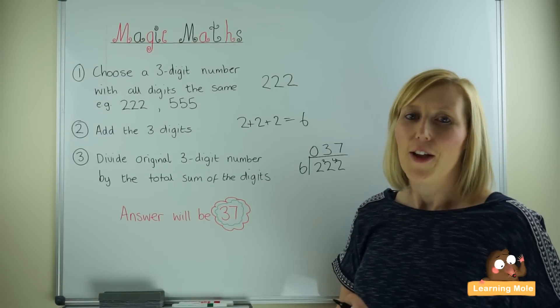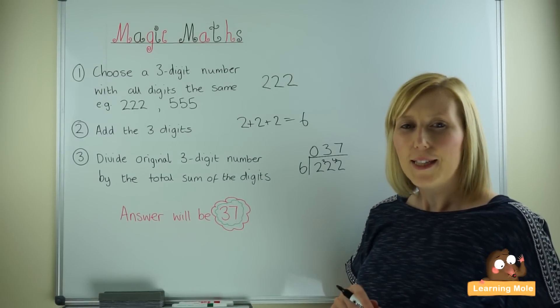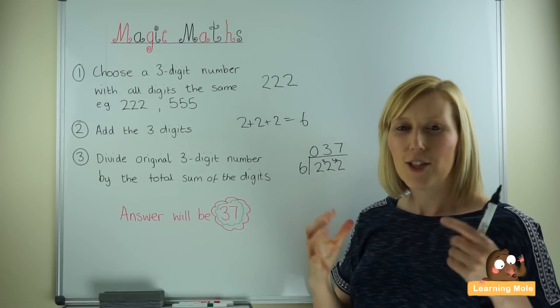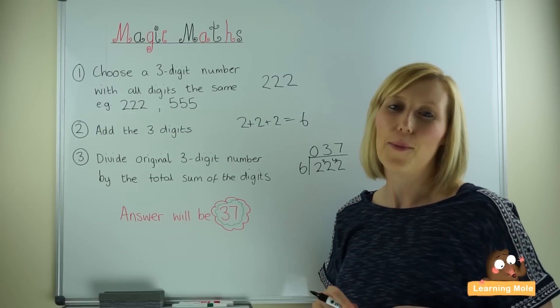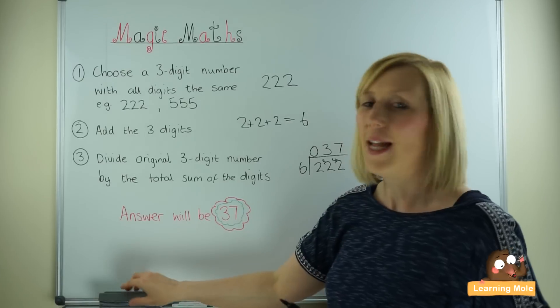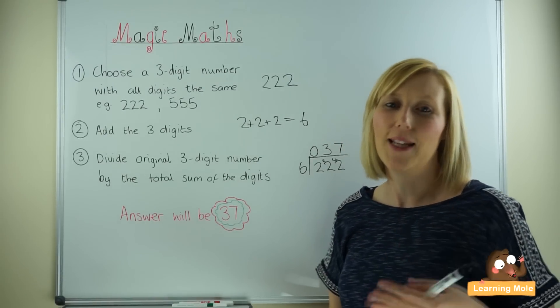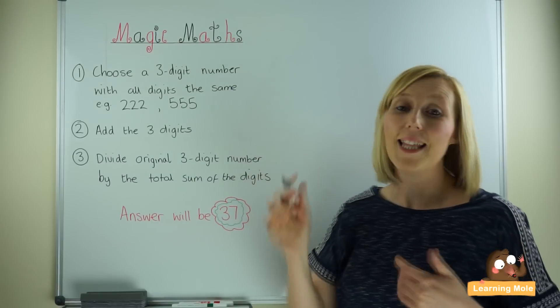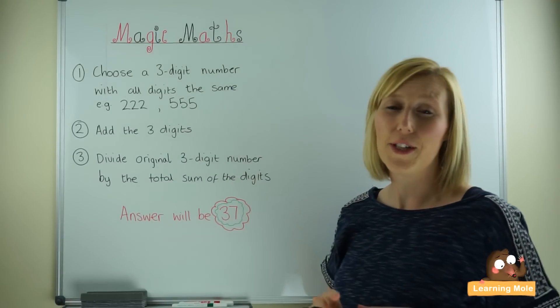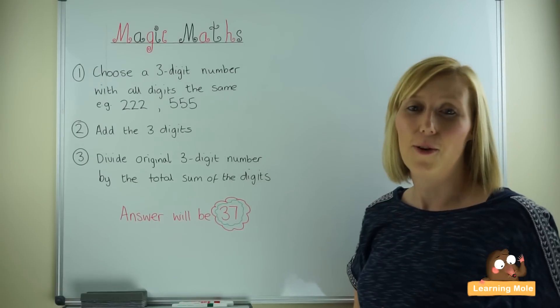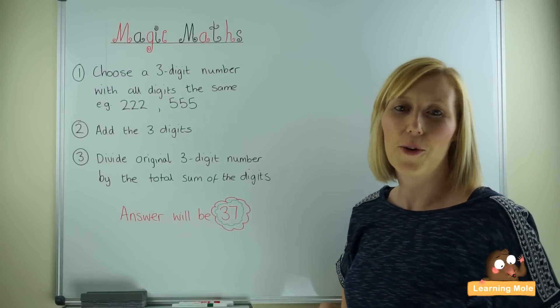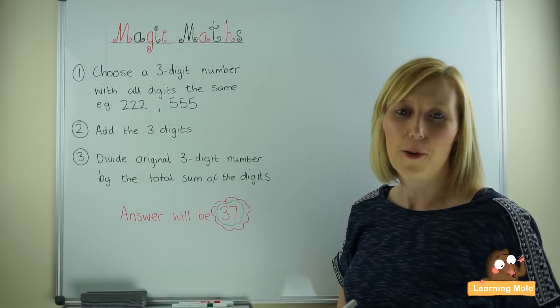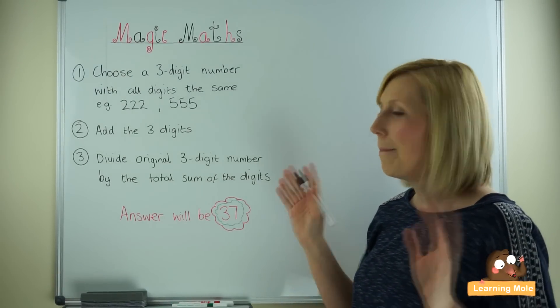Think about how many people will be amazed when your child goes around with this challenge and is always able to predict the answer. Let's try another one so you can have another little practice. This is a great video to show your children because they can use the formula and use this video to then go around practicing on other people and always getting to that magical 37.